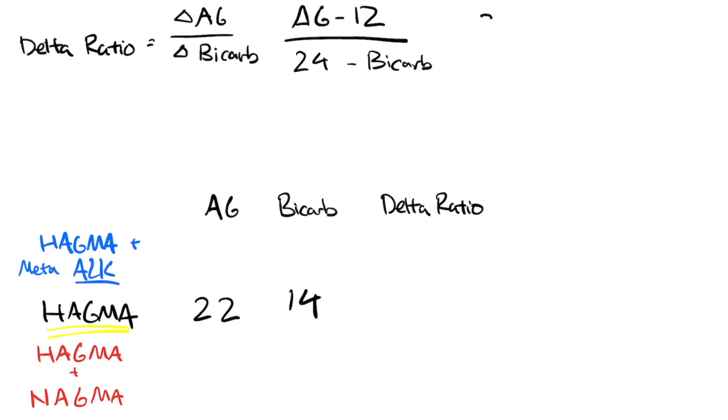We'll plug this into our formula. So in this case, this is going to be 22 minus 12 is our actual anion gap that we measured with an expected of 12, 12 being the normal, over our expected bicarb, which is 24, minus our actual bicarb, which is 14. This gives us 10 over 10 or 1. So in this case, the delta ratio is 1.